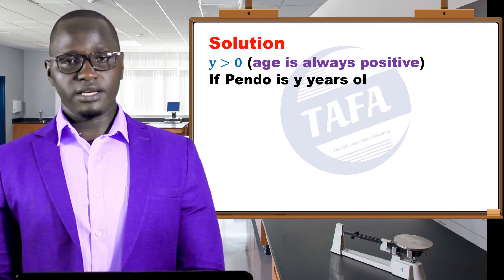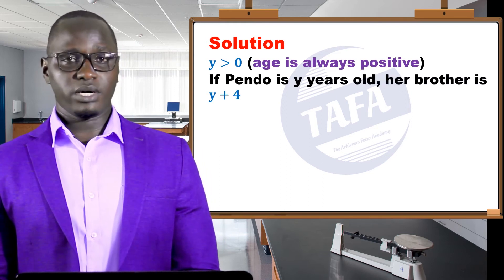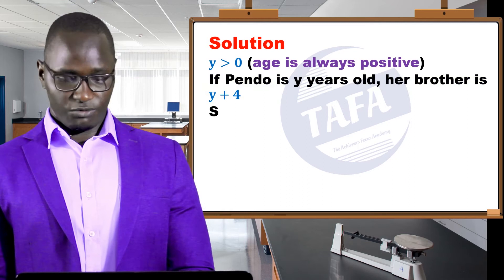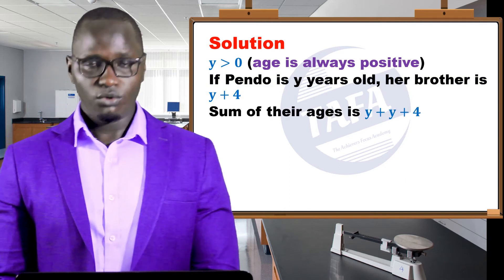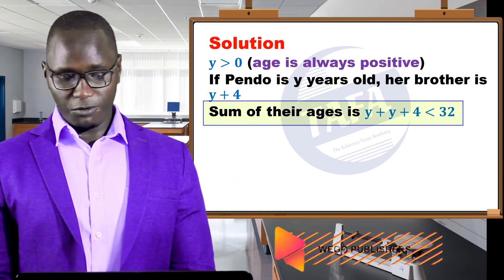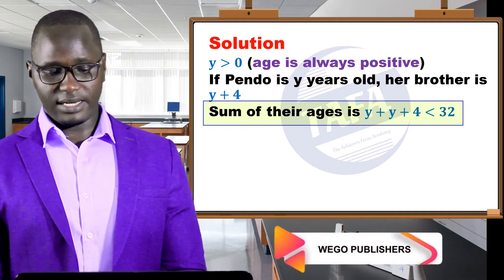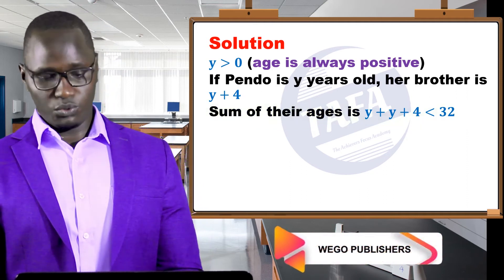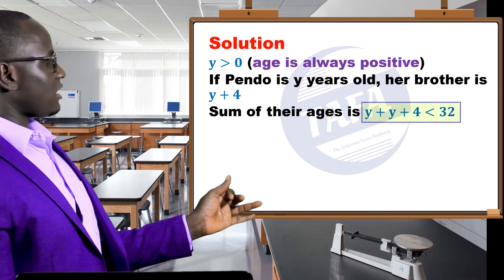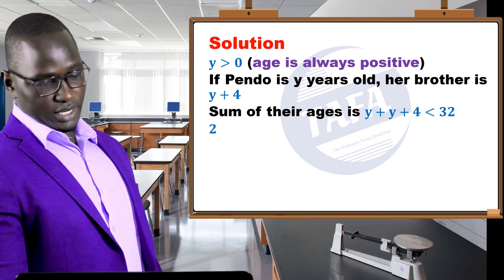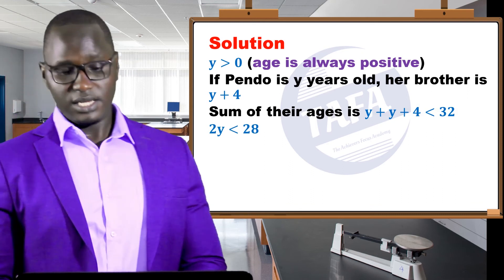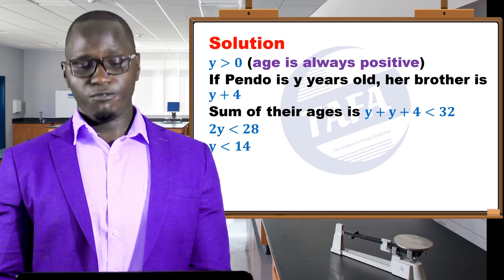Pendo is y years old, so her brother is y plus four. The sum of their ages is y + (y + 4), which is less than 32. This gives us 2y < 28, and therefore y < 14.